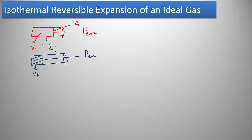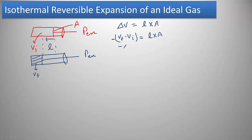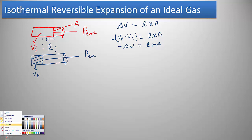Using this setup, the change in volume equals the length travelled by the piston times the area of cross-section: ΔV = L × A. Since volume is decreasing, ΔV (V final minus V initial) is a negative value. To make it positive, we use a negative sign, so minus ΔV equals L times A. Next, we need to find the work done.